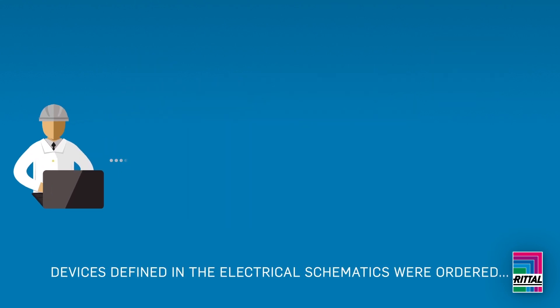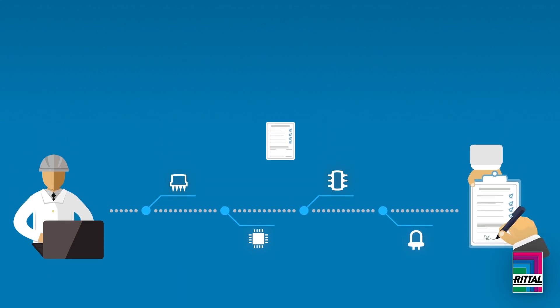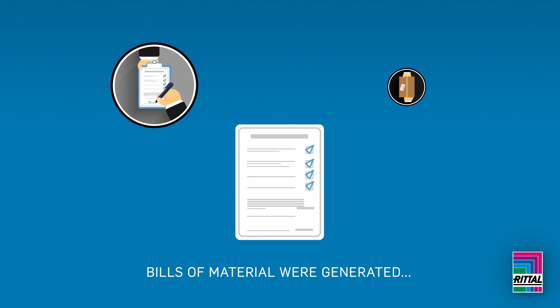Between engineering and purchasing, all devices defined in the electrical schematics were ordered. Bills of materials were generated, purchasing departments often recreating orders for each device and supplier.